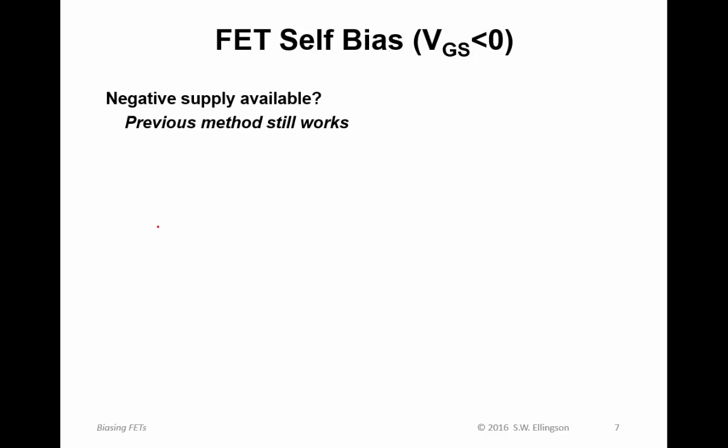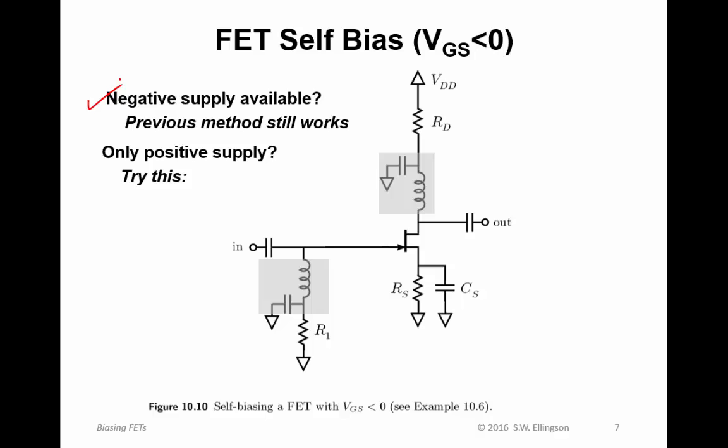Now what happens if V_GS is to be negative? This is a fairly common situation for field effect transistors. If you have a negative supply, there's no problem because you can simply use the negative supply to bias the transistor. However, what frequently happens is that you either have or want to limit yourself to just positive supplies. Introducing multiple power supply levels increases the complexity and cost of the design. So we'd like to try to make do with a positive design if we can.